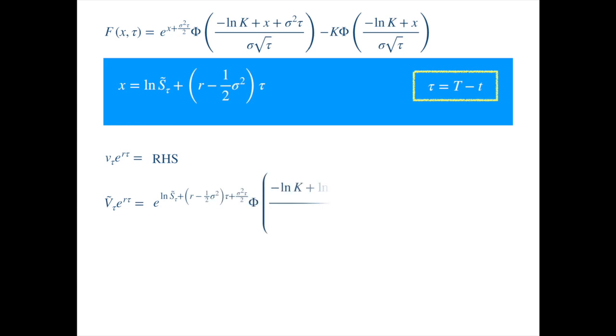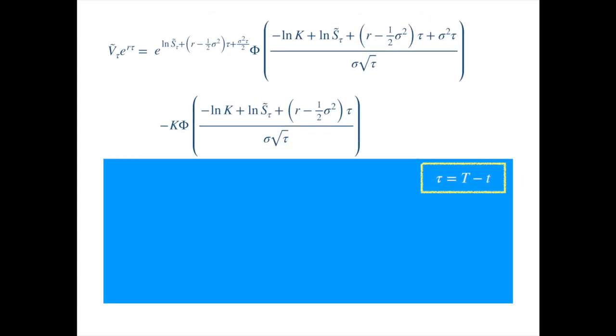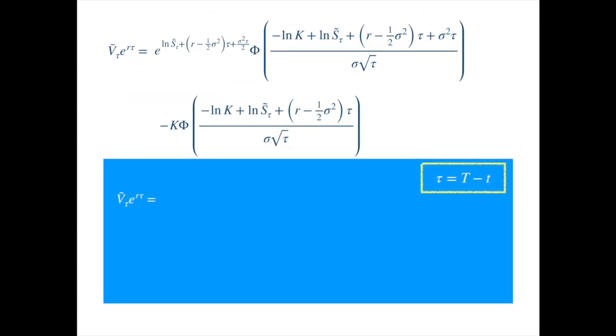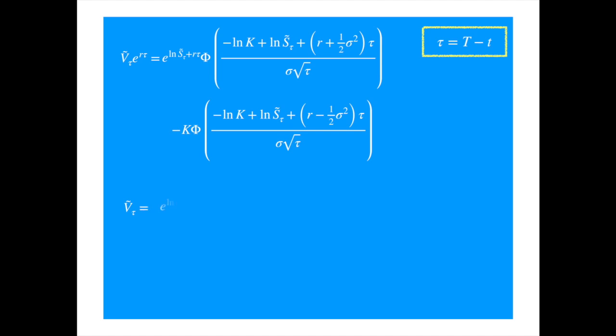Remember from the previous video, we denoted the option price and the stock price with tilde before applying this transformation, so we get... Now we see sigma squared everywhere, so let's simplify what we can.